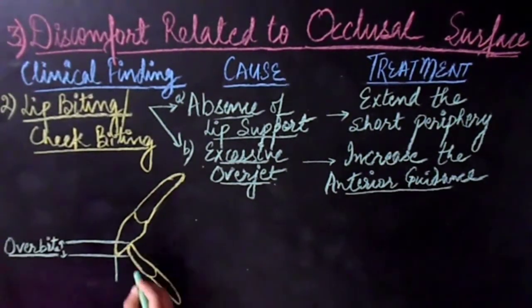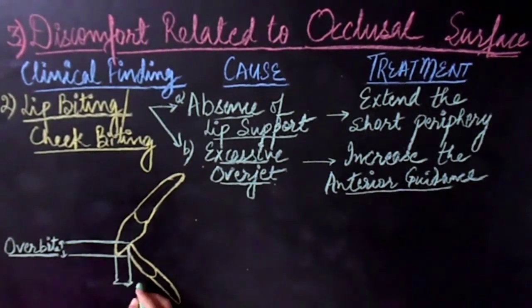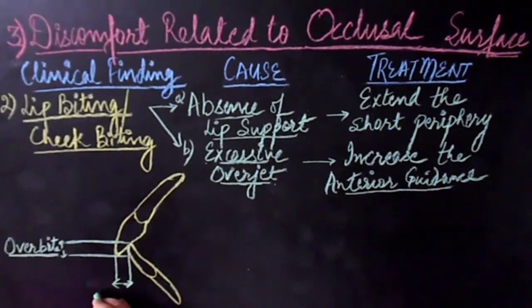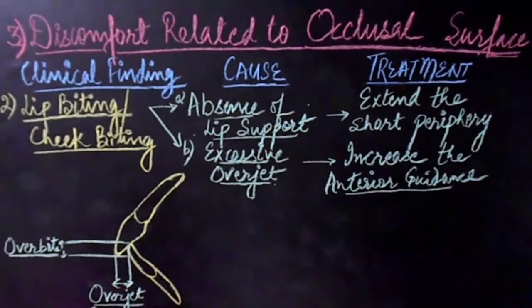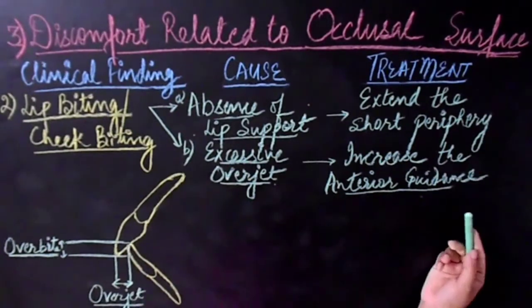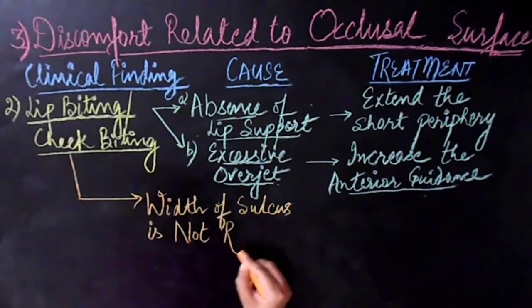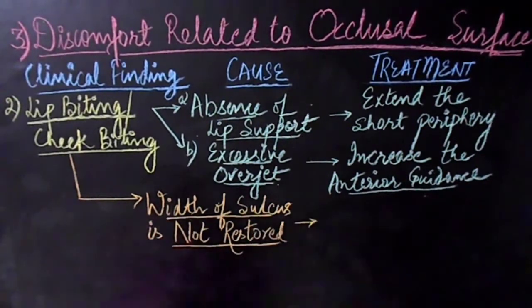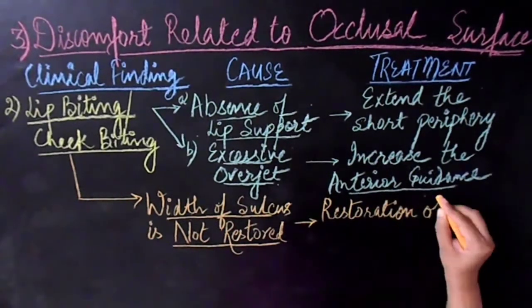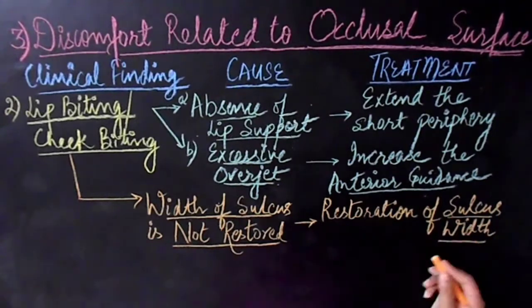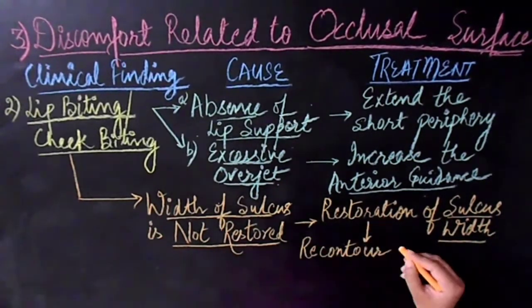For those who want to know the difference between overbite and overjet: the vertical overlap between the incisal edges is the overbite, and the horizontal overlap is the overjet, as seen in this diagram. As explained, when excessive overjet causes lip biting, we need to increase anterior guidance. Cheek biting generally happens when the width of the sulcus is not restored. In this case, restoration of the functional sulcus width is advised, which can be done by recontouring the buccal surfaces of the mandibular molars.